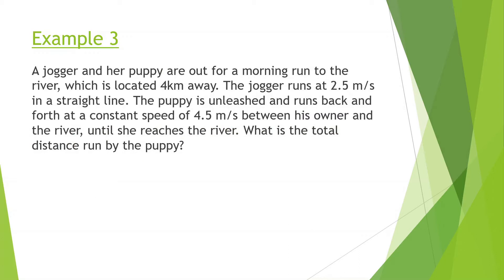Example three. So this one could be a little tricky. A jogger and a puppy are out for a morning run to the river, which is located four kilometers away. The jogger runs at 2.5 meters per second in a straight line. The puppy is unleashed and runs back and forth at a constant speed of 4.5 meters per second between his owner and the river until she reaches the river. What is the total distance run by the puppy? Remember, the K stands for 1,000, so this is going to be 4,000 meters.